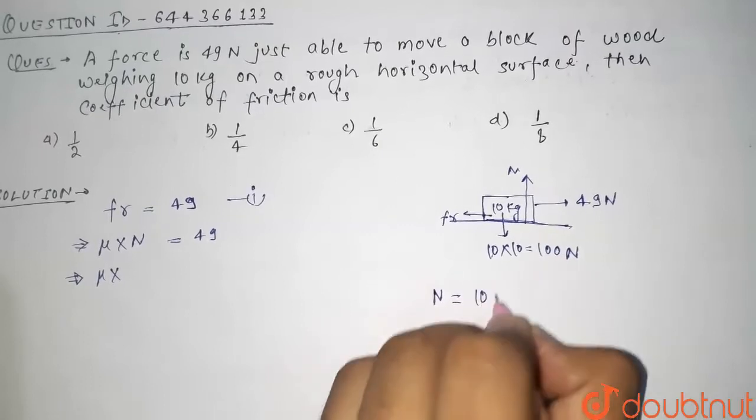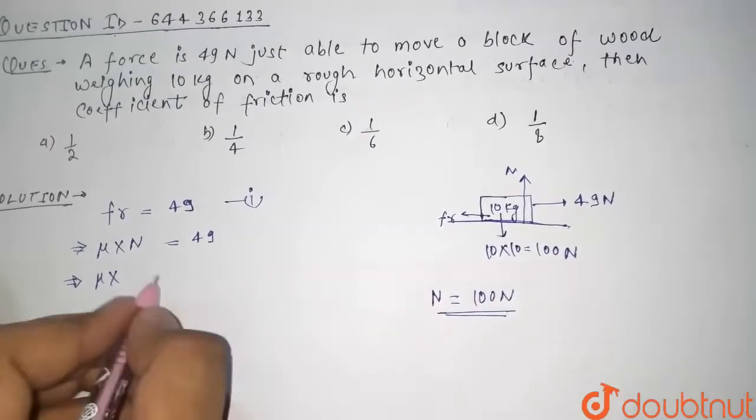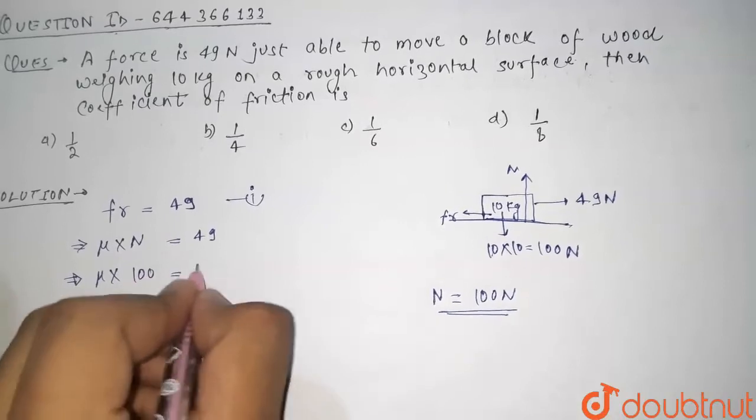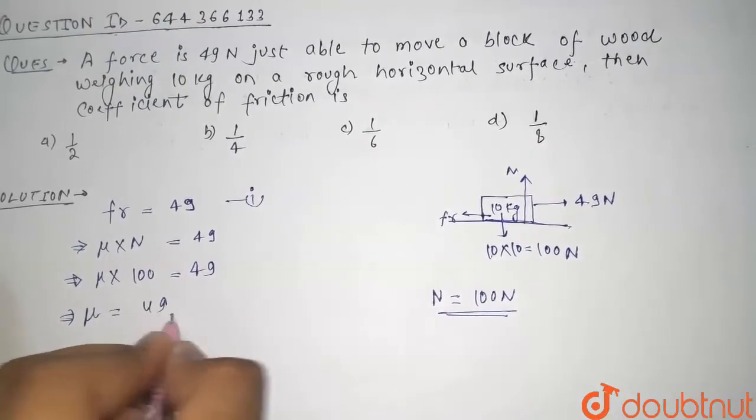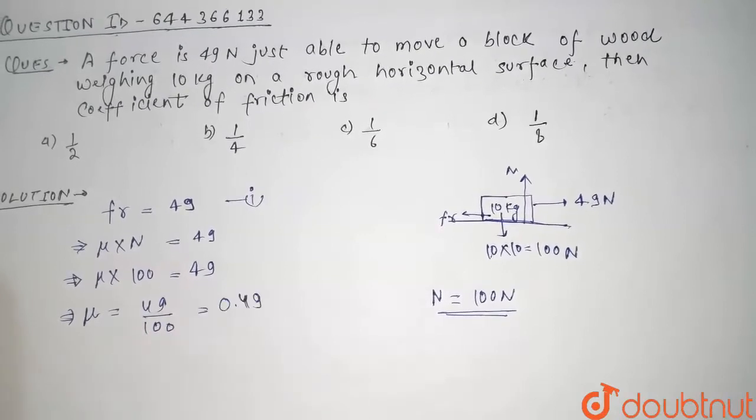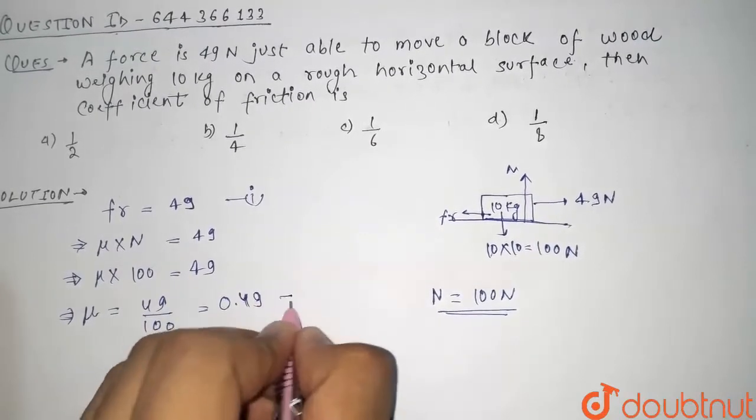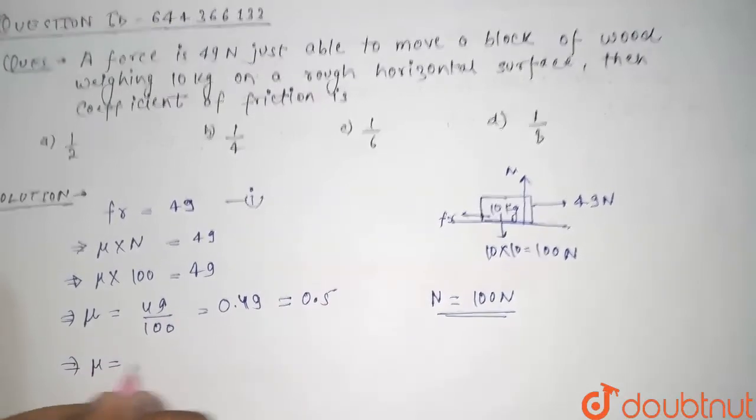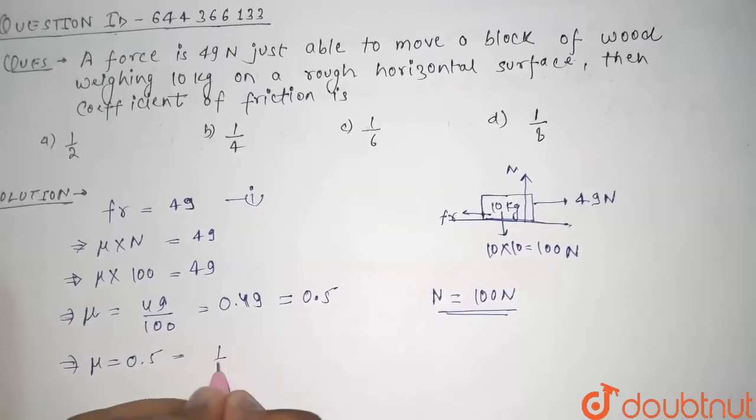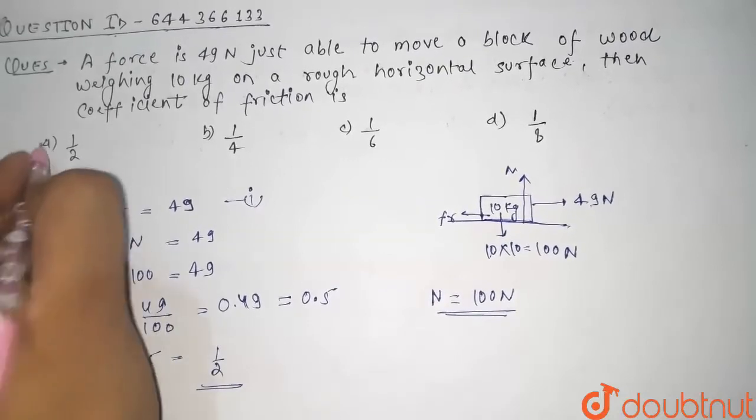So we will put this value here, so it will become mu times 100 equals 49. From here, mu comes out to be 49 by 100, this is equal to 0.49, which is approximately equal to 0.5. So mu is equal to 0.5, that is equal to half. The correct option is option b.